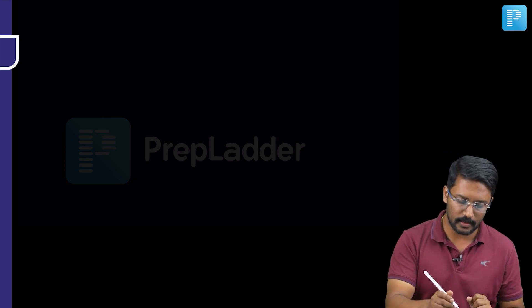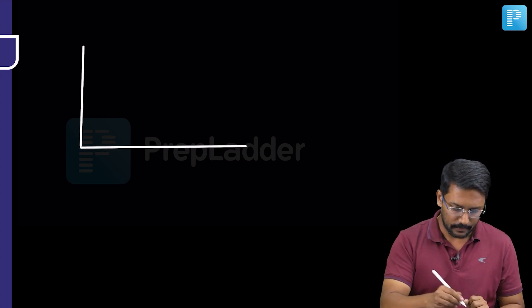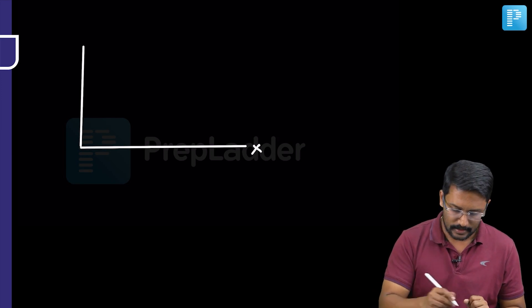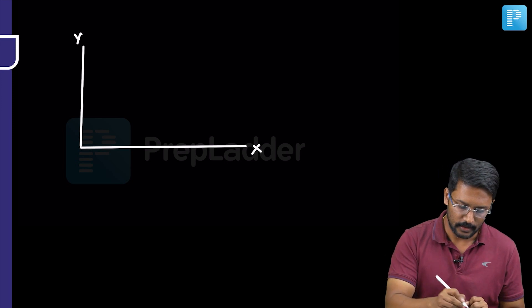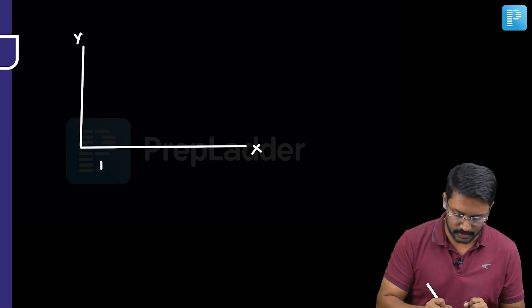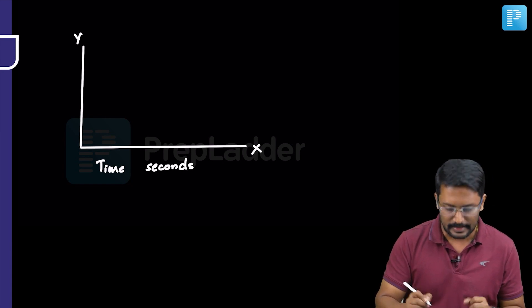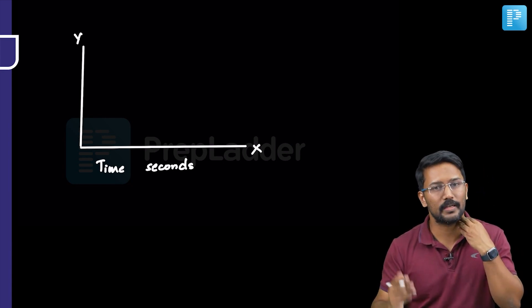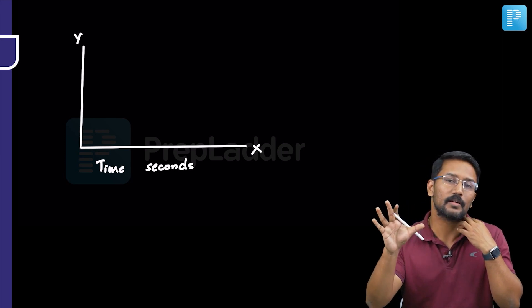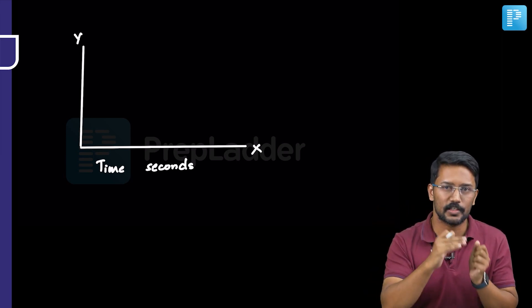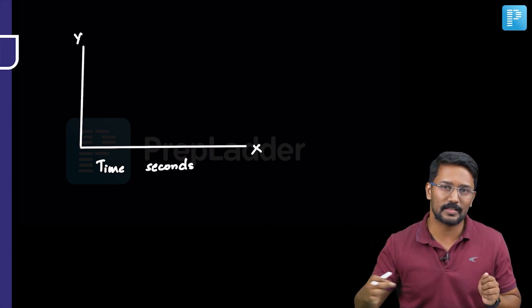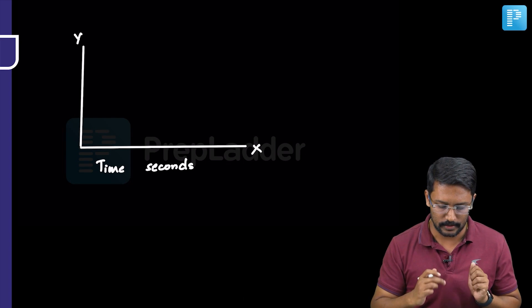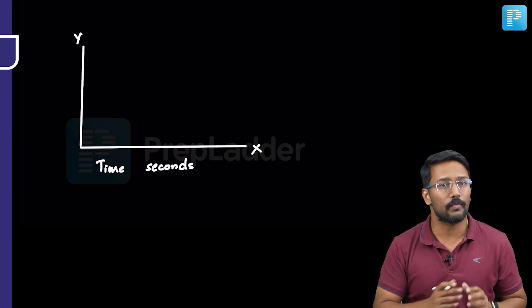On the topographic image, the x-axis represents time expressed in seconds — from the beginning of swallowing until the lower esophageal sphincter opens and the food bolus is transferred from the esophagus to the stomach. On the y-axis, what is plotted is the distance from the upper esophageal sphincter.